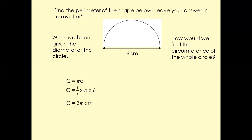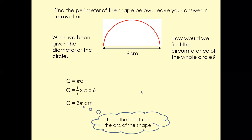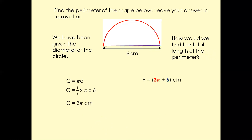Now we want to find the perimeter, and the perimeter is the sum of all the sides — this side, this arc which is the semicircle, and this line here which is the diameter. So we have to add the circumference of the semicircle and the length of the diameter to get the final answer. The final perimeter is going to be 3 pi, which is the length of this semicircle, plus 6, which is the length of this diameter.